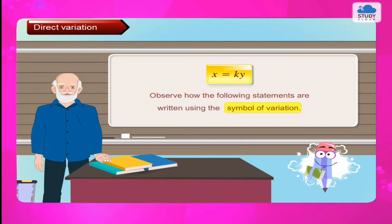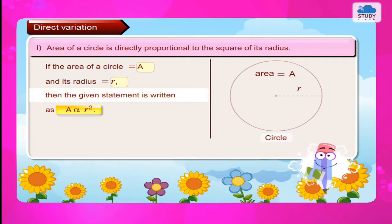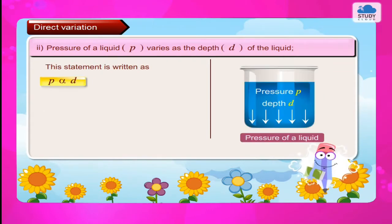Observe how the following statements are written using the symbol of variation. 1. Area of a circle is directly proportional to the square of its radius. If area = a and radius = r, then a is directly proportional to r squared. 2. Pressure of a liquid p varies as the depth d of the liquid. This is written as p is directly proportional to d.